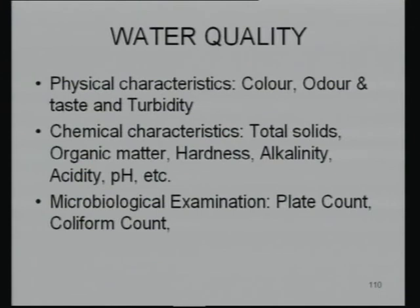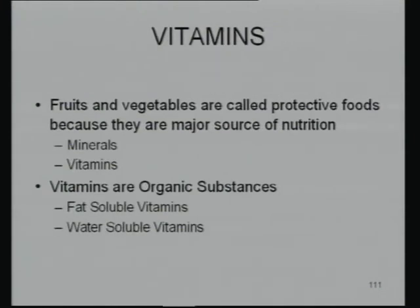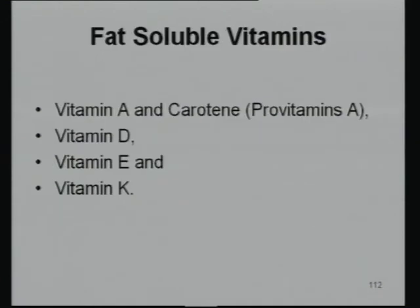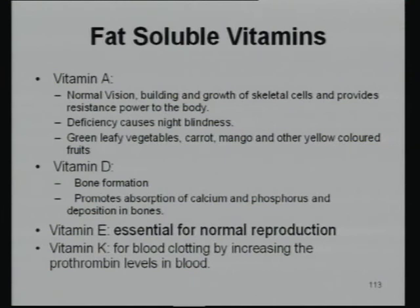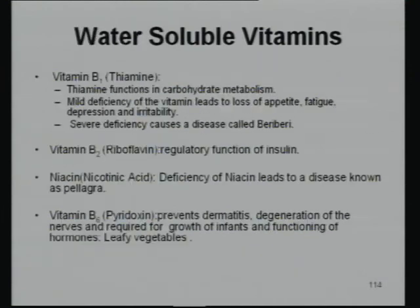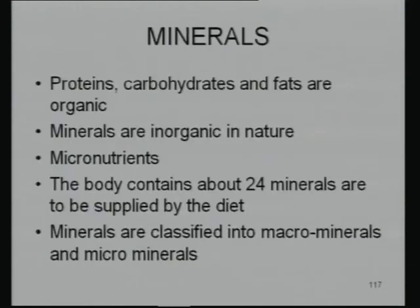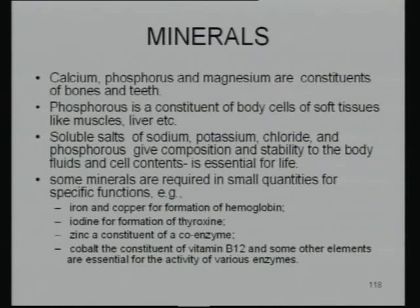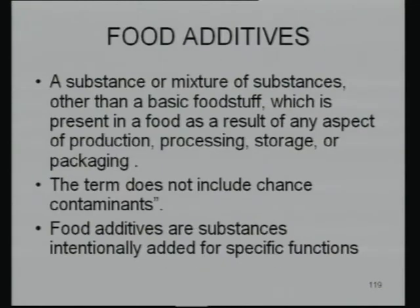Color, odor, taste, and turbidity are also water quality parameters. Vitamins are very important in fruits and vegetables — that is why they are called protective foods. Fat-soluble vitamins A, D, E, and K, as well as water-soluble vitamins including vitamin C, and their diseases and sources must be known. Minerals — calcium, phosphorus, and others among the 24 minerals in our body — should be known in reference to fruits and vegetables.